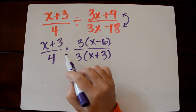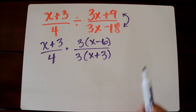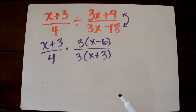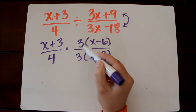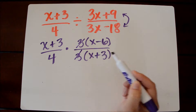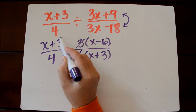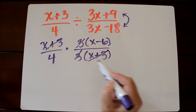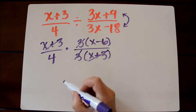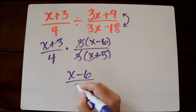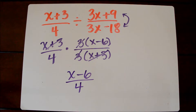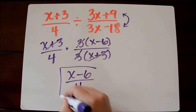At this point, anything that divides by itself will 1 out. So I could look at the 3 divided by 3 — 3 divided by 3 is 1, and so I could just go ahead and cross those out. And then x plus 3 divided by x plus 3 will also 1 out. And so what I'm left with here in the numerator is x minus 6 over 4. And this is the simplified expression.